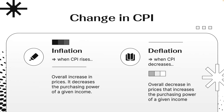Changes in CPI reflect economic conditions. Inflation is indicated when CPI increases — an overall rise in prices that decreases the purchasing power of a given income. On the other hand, deflation happens when CPI decreases, meaning overall prices fall, which increases the purchasing power of a given income.